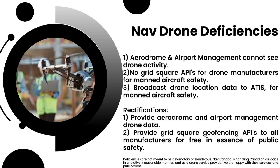On our final topic, we'll discuss some NavDrone deficiencies that may help drone pilots. First, aerodrome and airport management cannot see drone activity. Second, there are no grid square APIs for drone manufacturers such as DJI, Autel, or Skydio. Third, there is no broadcasting of drone locations specific to ADAS for manned aviation safety. To rectify this: provide aerodrome and airport management with drone data from NavDrone via an interface where they can interact with drone traffic, and provide grid square geofencing APIs to all manufacturers for free in the interest of public safety.